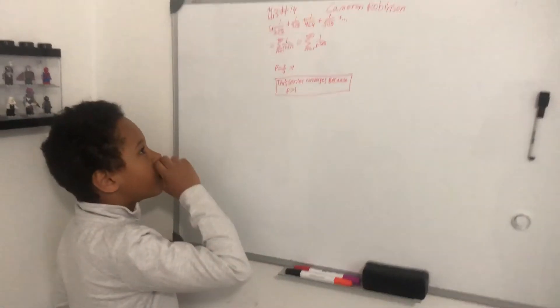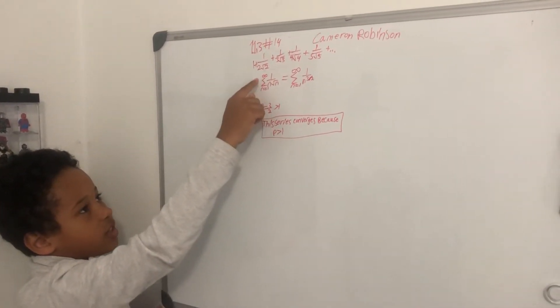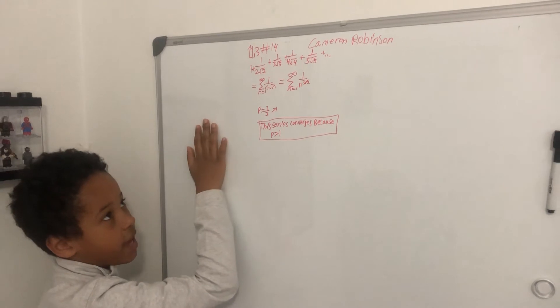First you know that this can be transformed into the series from n equals 1 to infinity of 1 over n squared over n.